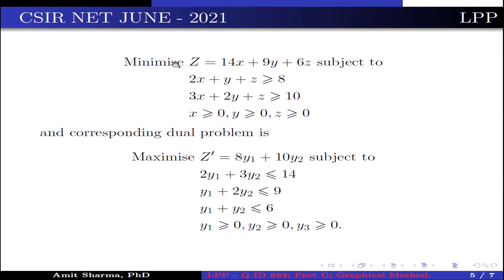This is so because the primal problem is given in the minimization form, that's why the dual problem is in the maximization form. The objective function is constructed with the help of 8 and 10, giving 8y1 + 10y2. Since the constraints are given in the greater-than-or-equal-to form in the primal, the dual constraints are in the less-than-or-equal-to form. The first constraint corresponding to the first coefficient of x is 2y1 + 3y2, which is less than or equal to the first coefficient value 14, and so on.